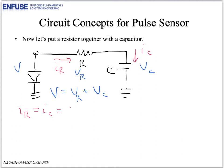And from the previous slide, we know that I sub C is equal to C dV_C dt. And now Ohm's law tells us that V sub R is equal to I sub R times R. And we can substitute in for I sub R, and we get RC dV_C dt.